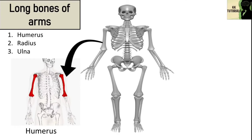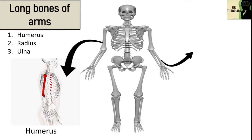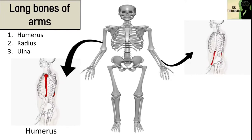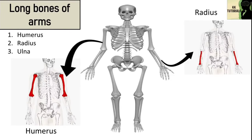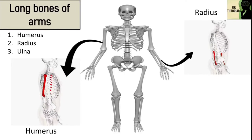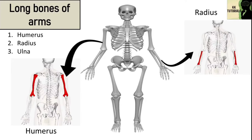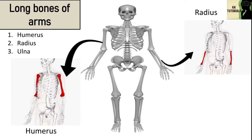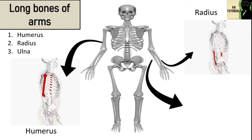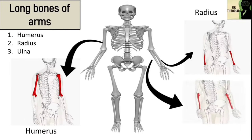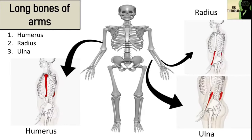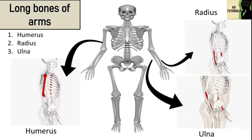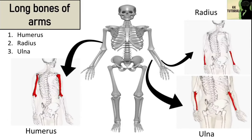The radius and ulna are the bones of the forearm. The radius bone supports the lateral side, meaning it is present on the side of your thumb. The ulna bone supports the medial side, meaning it is present on the side of your little finger, as shown in the figure.